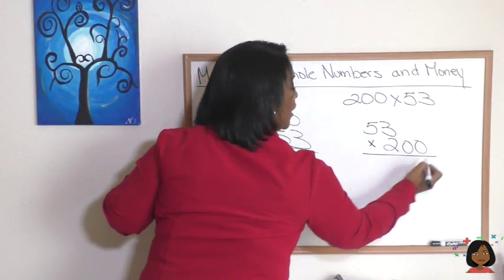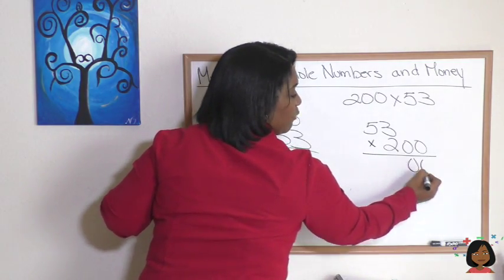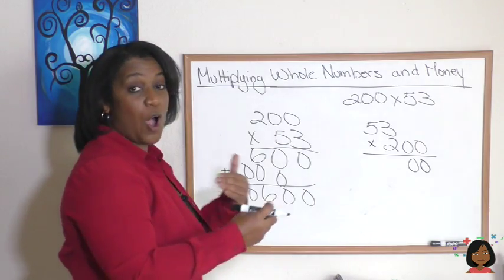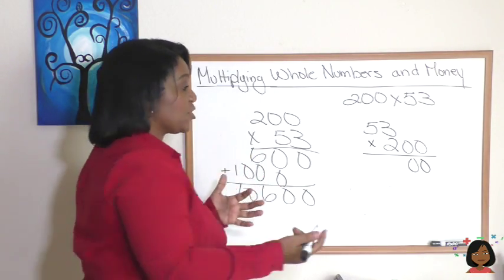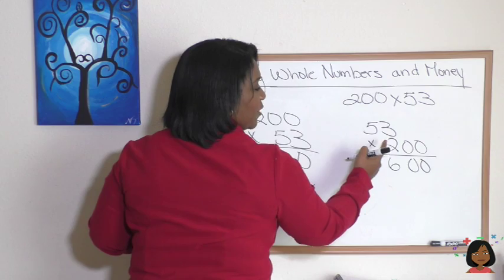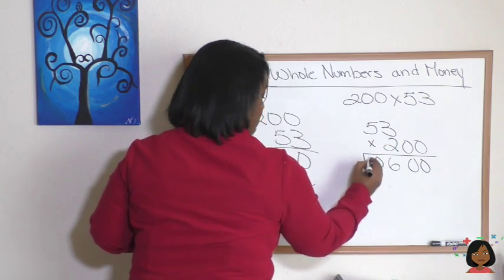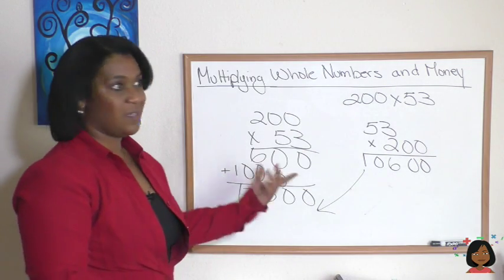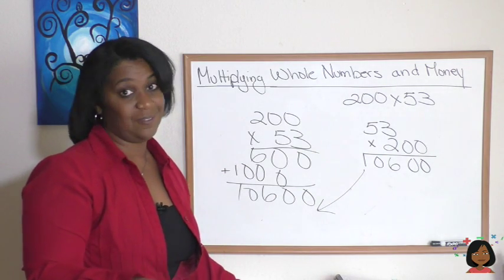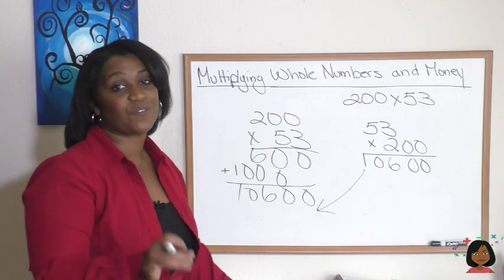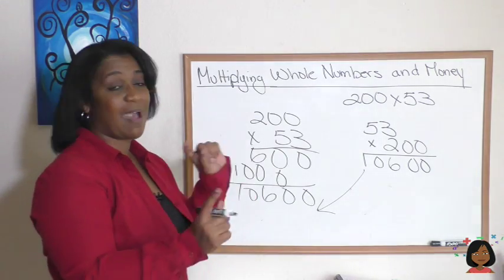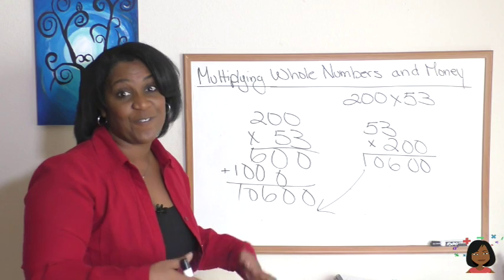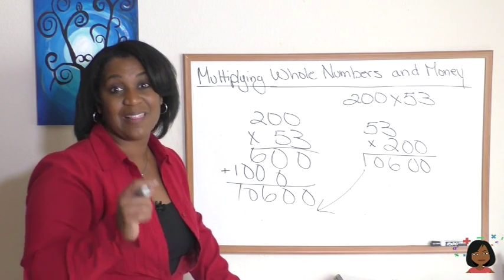These two zeros we're just going to bring them down. They're still going to be part of our answer, but we're only going to multiply the 53 times 2. 3 times 2 is 6, 5 times 2 is 10. Look, we have the same answer but did it in a lot fewer steps. You know me, I like looking for shortcuts. I did not come up with this—I wish I had—but it's definitely something I use to make my life a little easier in math.